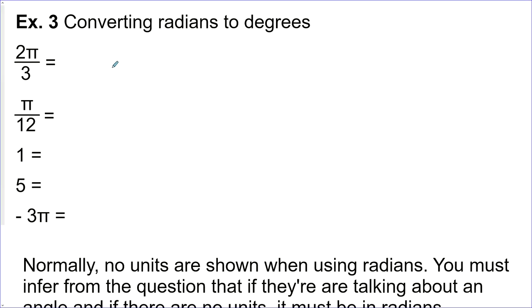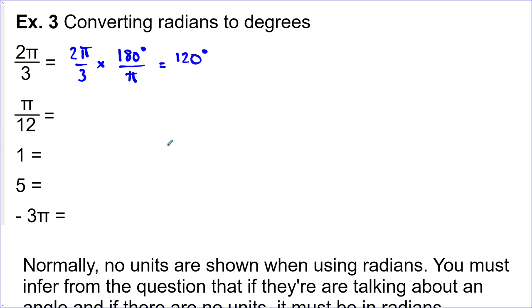We want to convert the other way — radians to degrees — and we just do the opposite: multiply by 180°/π. This time π is in the denominator because we want to cancel out the radian units and keep degrees. So for 2π/3: π cancels, 180 divided by 3 is 60, times 2 is 120 degrees. For π/12: multiply by 180°/π, π cancels, 180 divided by 12 is 15 degrees.